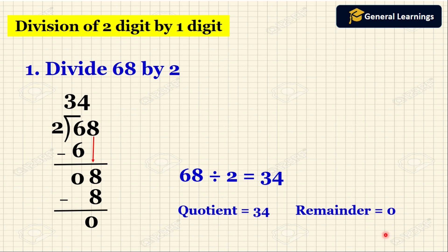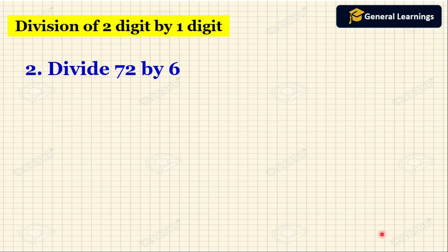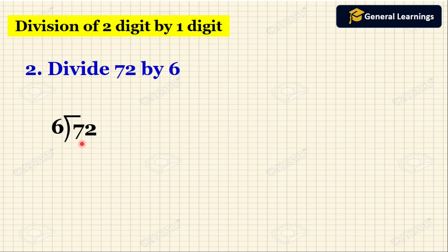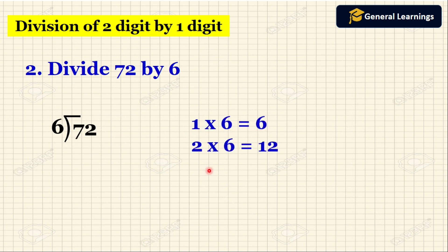Now we will see another example. Here they have given: divide 72 by 6. So we are going to write the division problem. Here 72 is the dividend. So first we are going to take the first digit of 72, which is 7, and then divide 7 by 6. For that we need to check the multiplication table of 6 to see whether 7 is coming or not. The multiplication table of 6 tells us 1 six is 6, 2 sixes are 12.